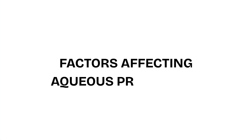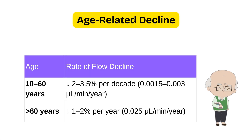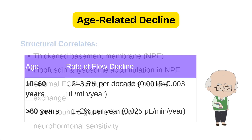Let's discuss the various factors that can affect aqueous humor production. First is age-related decline. From age 10 to 60, aqueous production drops by 2 to 3.5 percent per decade, and after 60 years the decline slows to about 1 to 2 percent per year.